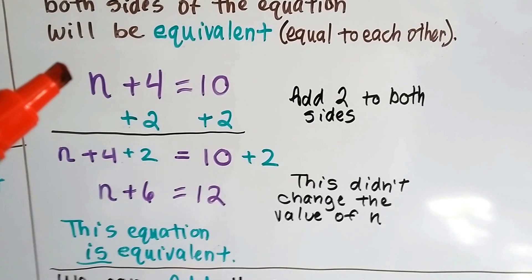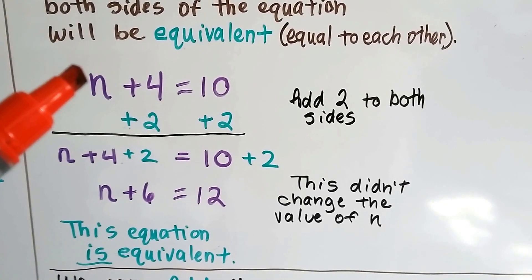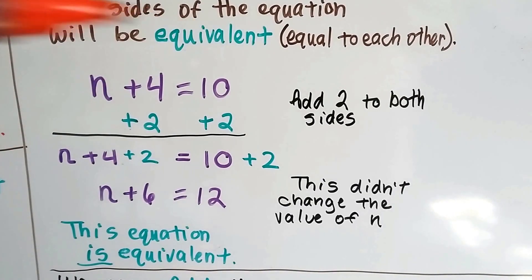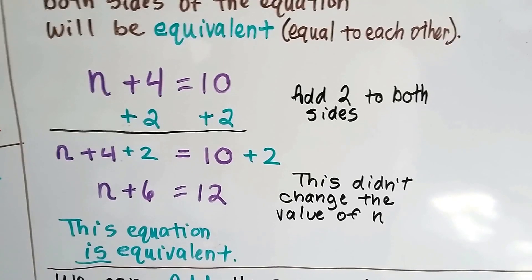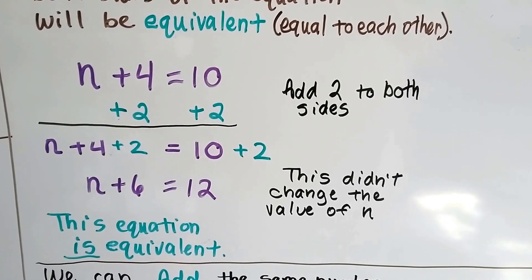Up here, it was a 6. n equal to 6 to be added to the 4 to get a 10. Look down here, n is still a 6 to get a 12. So this equation is equivalent.